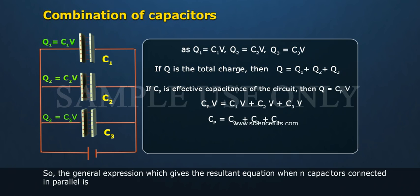So the general expression which gives the resultant equation when N capacitors connected in parallel is Cp equals sigma i equals 1 to N of Ci.